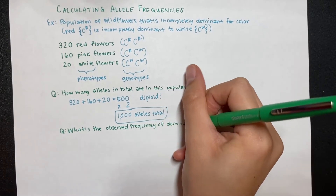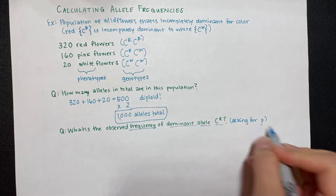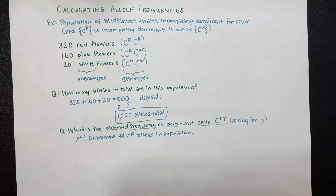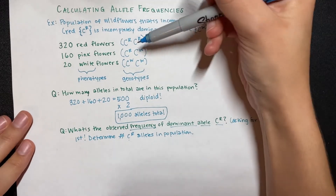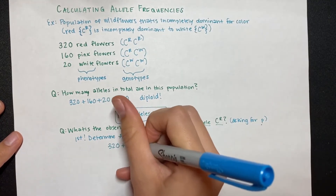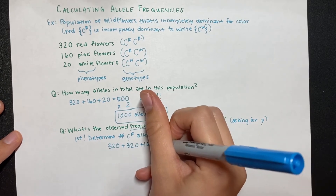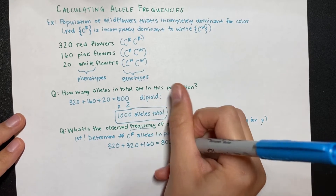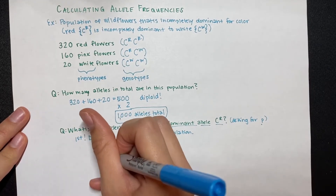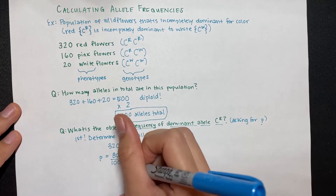Next, what is the observed frequency of the dominant allele CR? In other words, what is p? First, determine the number of CR alleles in this population. Each of the 320 red flowers has two copies of the CR allele, so add 320 plus 320. Then count the alleles in the 160 pink flowers — they each have one copy of CR, so add 160. That gives 320 + 320 + 160 = 800. To get the frequency, divide 800 by the total number of alleles: 800 ÷ 1,000 = 0.8.